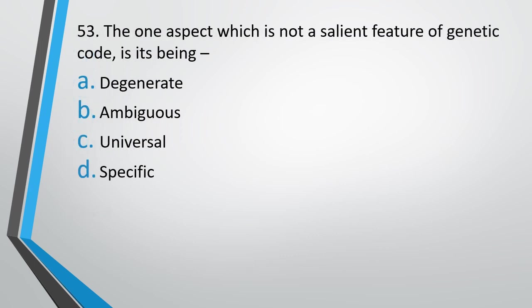Question number 53. The one aspect which is not a salient feature of genetic code is its being: degenerate, ambiguous, universal, or specific. The correct answer is option B — ambiguous. Ambiguity is not a salient feature of the genetic code.